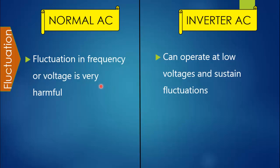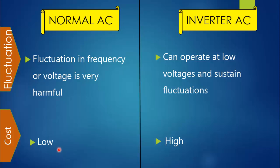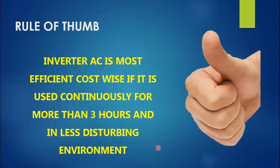Comparing both ACs further: first, regarding fluctuation in the supply — normal AC is prone to fluctuations in frequency and voltage, which can be harmful. Whereas the inverter AC can operate at low voltages because of its principle of operation. Obviously the inverter AC is the latest technology and has a special type of compressor, therefore its upfront cost is high.